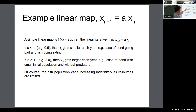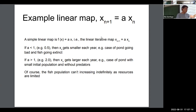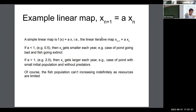So for parameter a less than one, the population of fish eventually becomes extinct. If a is bigger than one — take two as an example — each generation the population doubles. You get this exponential growth of the population of fish in the pond.